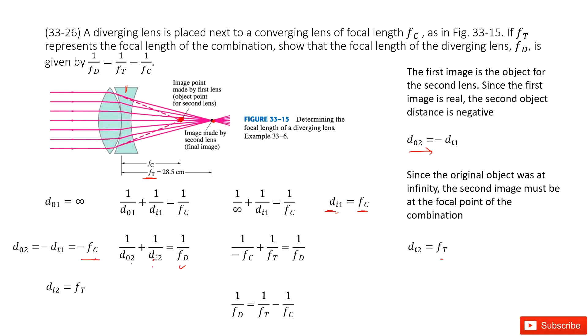And so we replace Di1 as negative Fc. And now we look at the Di2. There we talk about this focal point for the combination is just the image distance for the second lens. So we have it there. So we replace Do2 and Di2. We get it there. And converted it. We proved it there.